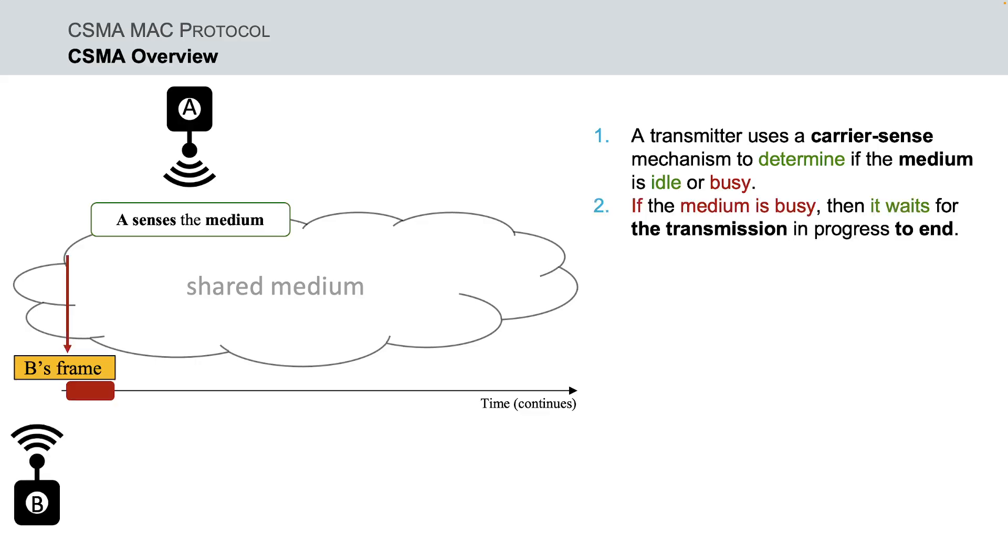If the medium is busy, then the node waits for the transmission in progress to end before initiating its own transmission. When the shared channel becomes idle, the node starts its own frame transmission.